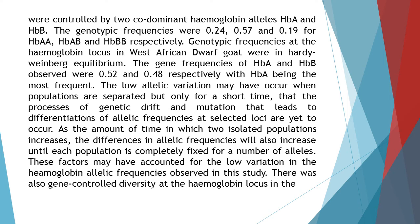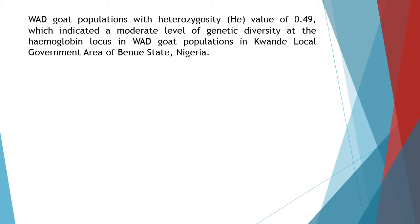There was also considerable diversity at the hemoglobin locus in the West African Dwarf Goat populations, with a heterozygosity value of 0.49, which indicated a moderate level of genetic diversity at the hemoglobin locus in goat populations in Kwan local government area of Bainway State, Nigeria.